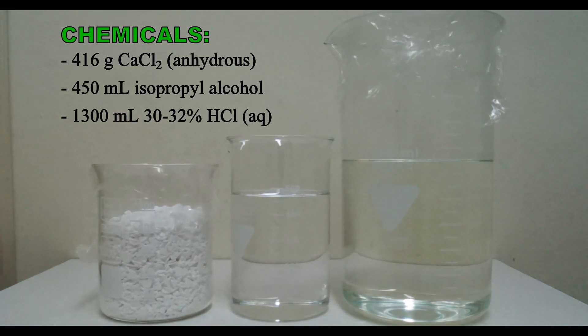For making isopropyl chloride, the following chemicals are needed. From left to right we have anhydrous calcium chloride. The one I used was intended for use in dehumidifiers and was purchased in a supermarket.